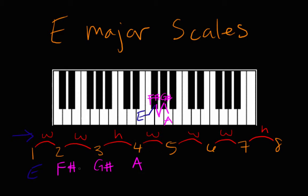Then to get to the fifth note, or the fifth of E, we go a whole step up from A. We go from A to A sharp, which is a half step, and then another half step, and we land on B. So B is the fifth of E. Then to get to the sixth note, we move a whole step up from B — from B to C to C sharp. So the sixth note is C sharp. Then from C sharp to get to the seventh note, we go another whole step up: half step, half step, we land on D sharp. And then finally, to get back to E, we go from D sharp and we just move up a half step, and we come back to E.